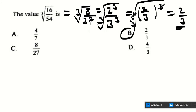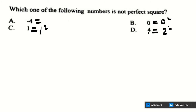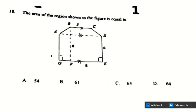The next question asks which number is not a perfect square. Zero equals 0 squared, 4 equals 2 squared, and 1 equals 1 squared. But negative 4 cannot be written as the square of any real number, because negative times negative gives positive 4, not negative 4. So the answer is A.